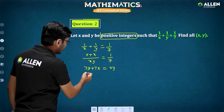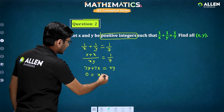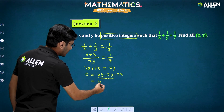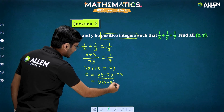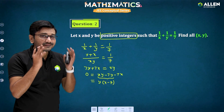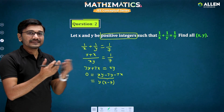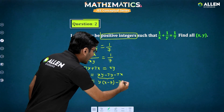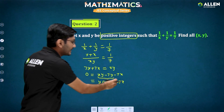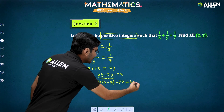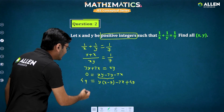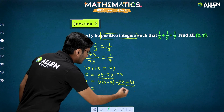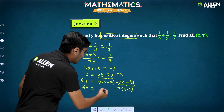Taking both terms to the right side leaves 0 on the left and xy minus 7y minus 7x on the right. From the terms xy minus 7y, I can take y common to get the factor x minus 7. Now I need to adjust the remaining minus 7x so that I can also get x minus 7 from it — I should add 49. Adding 49 to both sides, on the right I get y times (x minus 7) minus 7 times (x minus 7).